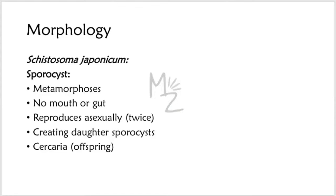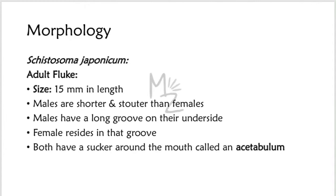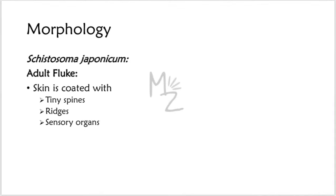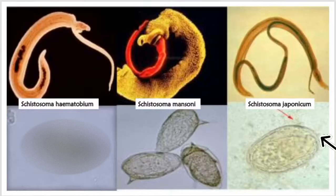The cercaria of S. japonicum is 200 by 70 micrometers in size and has two flukes. The adult fluke is 15 millimeters in length; males are shorter and stouter than females. Males have a long groove on the underside in which the female resides. Both have a sucker around the mouth called an acetabulum, and the skin of the adult fluke is coated with tiny spines, ridges, and sensory organs. The three species can be distinguished by their eggs: S. mansoni has a prominent lateral spine, S. japonicum has a very small lateral spine, and S. haematobium has a terminal spine.